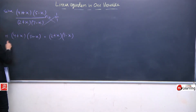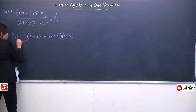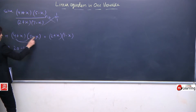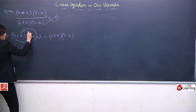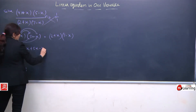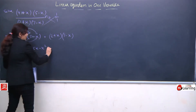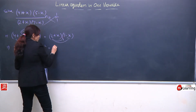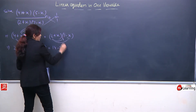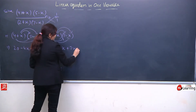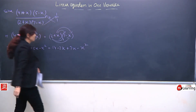Through the distributive property, ham isse open karenge — 4 ka ham in dono terms se multiply karenge. 4 fives are 20, minus 4x. Similarly x ke saath hoga plus 5x minus x square on the LHS. Same pattern on RHS: 7 twos are 14 minus 2x, then x ka multiply hoga plus 7x minus x square.